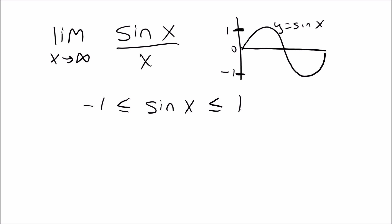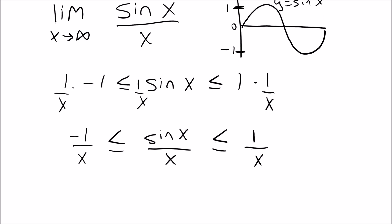Okay, well in order to do this problem then, what I'm going to do is I'm just going to multiply everything by one over x. So I'm going to multiply this first thing by one over x, the last thing by one over x, and the middle by one over x. So with that here, I'm going to get negative one over x is less than or equal to sine of x over x, which is less than or equal to one over x.